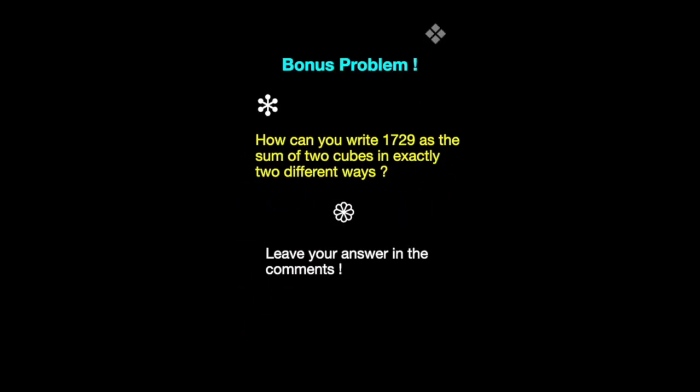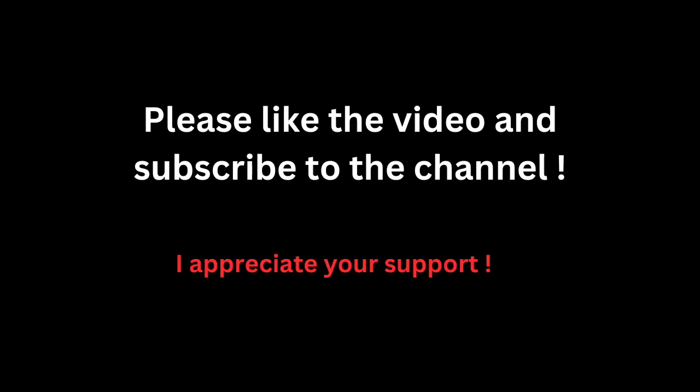Now here's our bonus problem. Can you write 1729 as the sum of two cubes in exactly two different ways? Leave your answer in the comments, and thanks for watching.